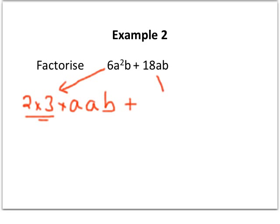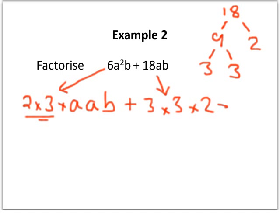Now the 18ab is a little bit more complicated, so I'll just do some workings in the top corner. Now 18 we know we can break down to 9 and 2, and then 9 breaks down to 3 and 3. So 18ab we can write as 3 times 3 times 2 times a times b.